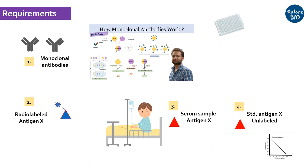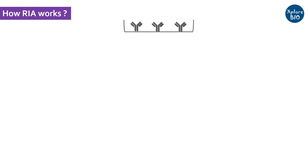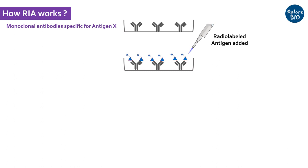Other than this, you would need an ELISA plate, reagents, centrifuge, radioactivity counter, etc. Now let's look at how RIA actually works. In the ELISA plate, monoclonal antibodies are bound to the base. Next, a sufficient amount of radiolabeled antigen X is added to the plate to ensure that all the antigen-binding sites of the antibodies are occupied by the labeled antigen X. The antigens unbound to the antibodies are washed off.